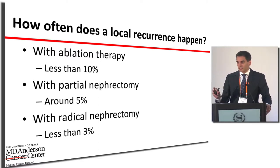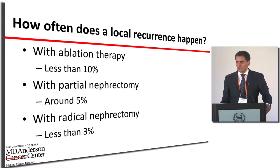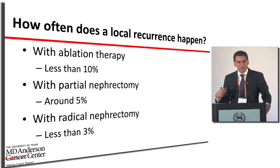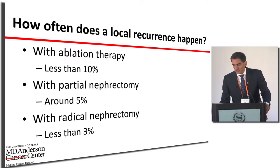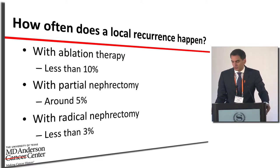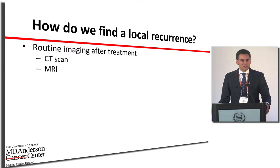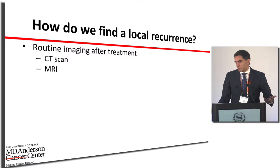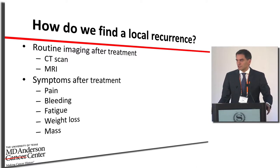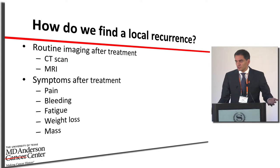Thankfully, this is a rare event, which is why most manuscripts I'll discuss are small series with a small number of patients. There are two main ways to find a local recurrence: either by routine imaging — say you're seeing your doctor every six months or every year and something shows up — or these tumors would be asymptomatic, meaning you don't feel anything, it just appears on images.